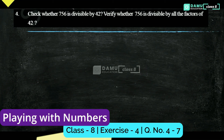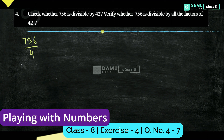In this module, we are going to discuss the fourth question: check whether 756 is divisible by 42 or not, and verify whether 756 is divisible by all the factors of 42. Let's take 756 divided by 42. We don't have a direct divisibility rule for 42, so 42 can be written in the format of 6 into 7.